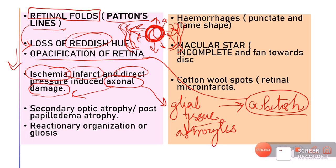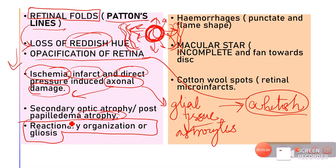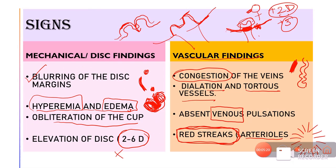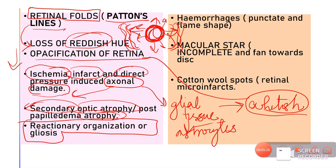In the stage of optic atrophy, after papilledema becomes chronic, all the axons start degenerating and are replaced by glial tissue. This is called reactionary organization or gliosis, also known as post-papilledema atrophy or secondary optic atrophy, because the optic atrophy is occurring secondary to papilledema. Before optic atrophy sets in, congestion of the veins leads to hemorrhages around the disc.